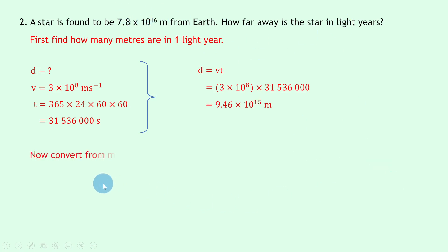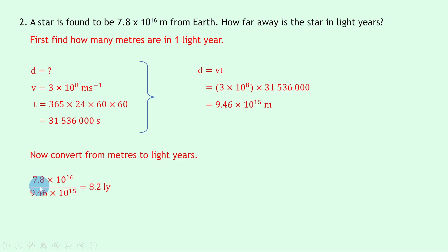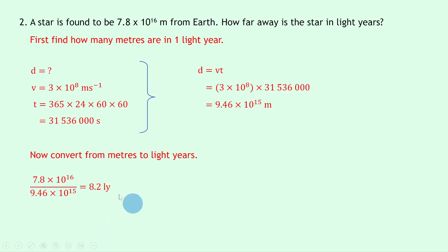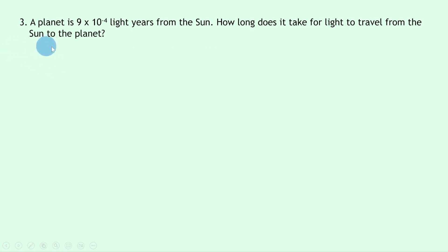Now to convert from meters to light years we divide: 7.8×10¹⁶ ÷ 9.46×10¹⁵, and if you put that into your calculator you should get an answer of 8.2 light years once you round it.